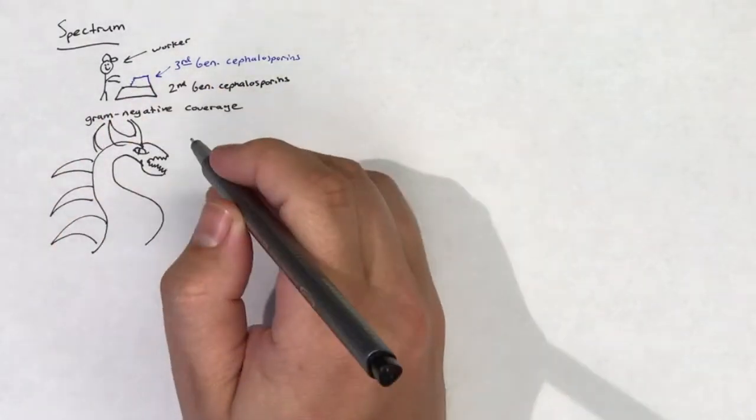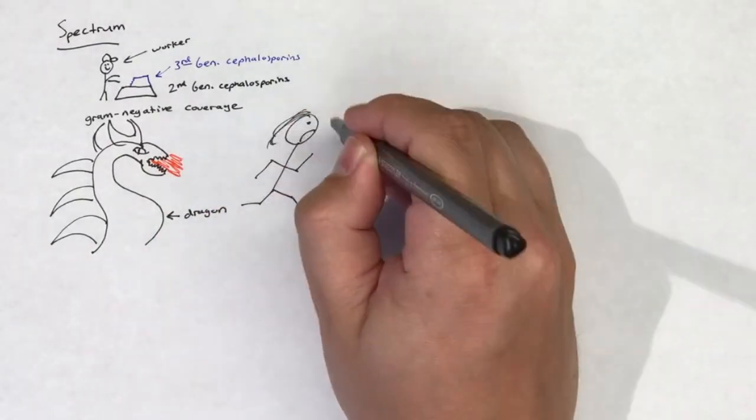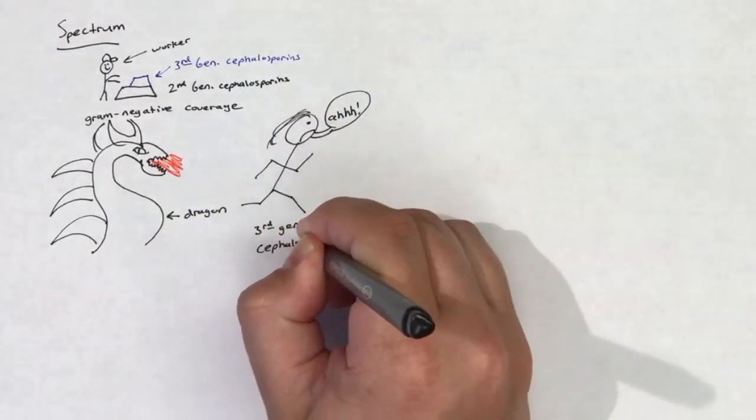However, this expansion of gram-negative coverage causes third-generation cephalosporins to tend to have less activity against gram-positives, especially streptococci and staphylococci species versus first-generation cephalosporins.